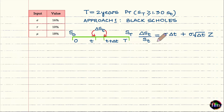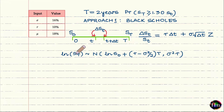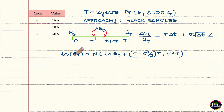Without proof, this GBM assumption implies that the natural log of S-sub-t follows a normal distribution with mean equal to the natural log of today's price plus (r minus sigma-squared over 2) times t, and variance equal to sigma-squared times t. This means S-sub-t follows the log-normal distribution — because the natural log of S-t follows the normal distribution.